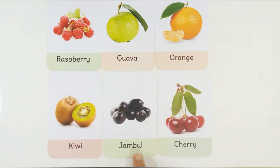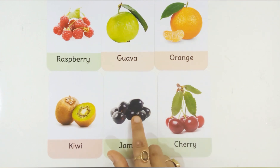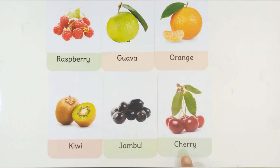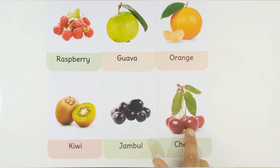J for Jambul. J-A-M-B-U-L, Jambul. This is Jambul. Jambul is a fruit. C for Cherry. C-H-E-R-R-Y, Cherry. This is Cherry. Cherry is a fruit.